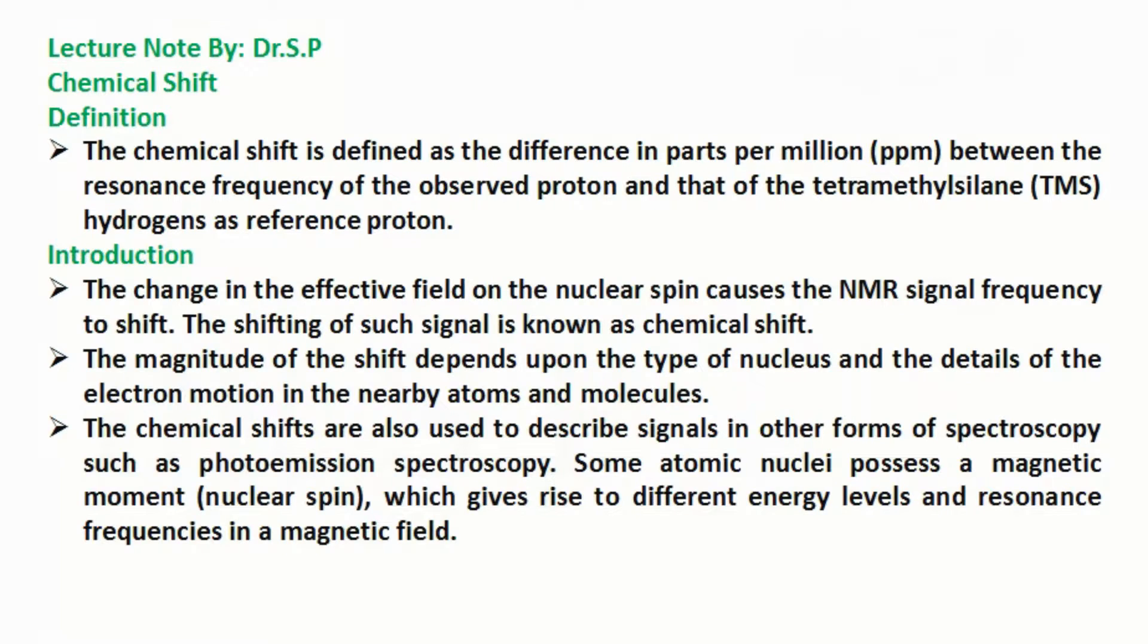Introduction: The change in the effective field on the nuclear spin causes the NMR signal frequency to shift. The shifting of such signal is known as chemical shift. The magnitude of the shift depends upon the type of nucleus and the details of the electron motion in the nearby atoms and molecules.